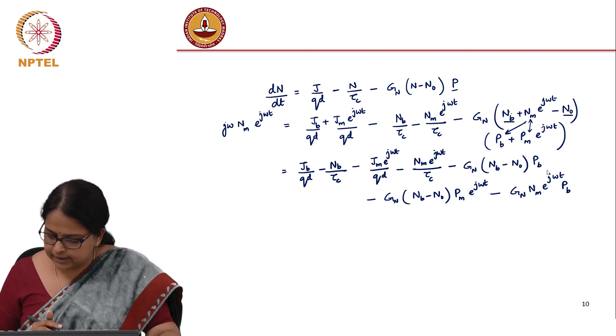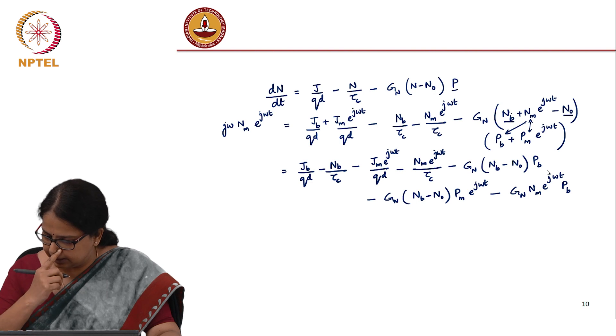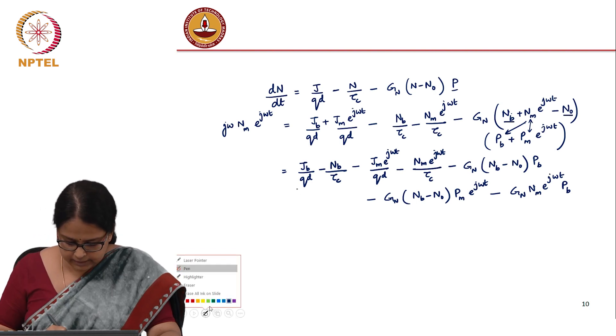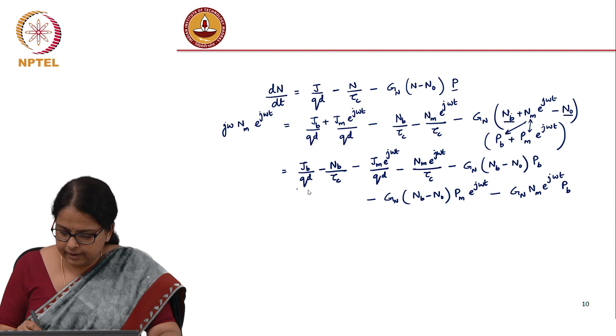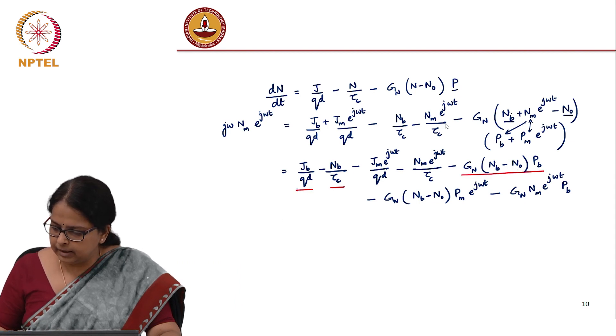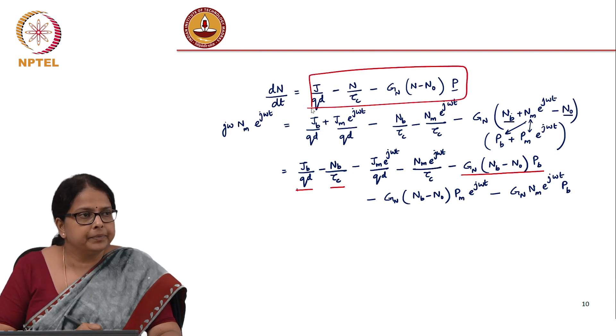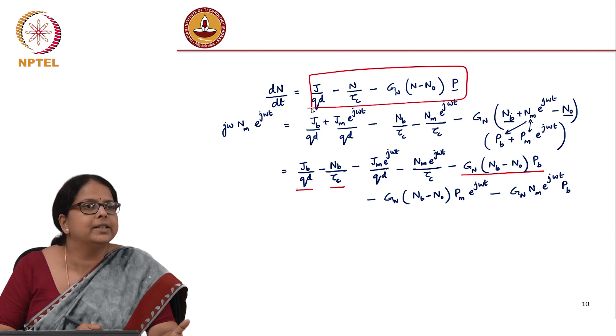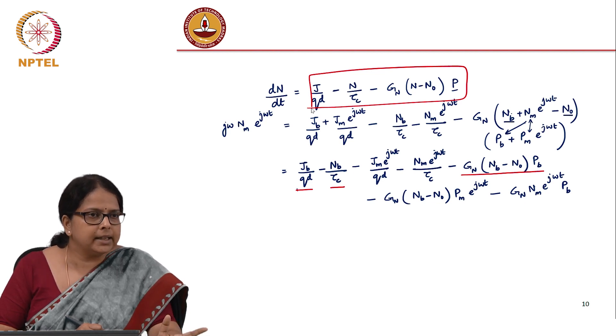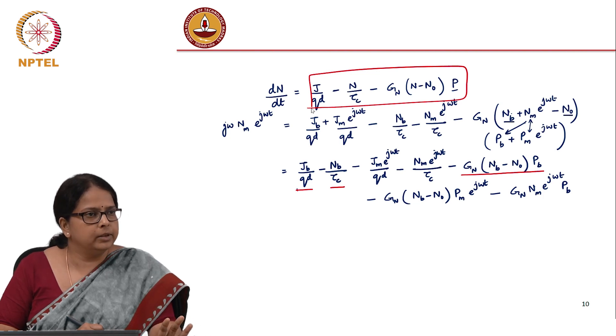Now what are the DC terms? Is there a way we can kill all of that? If you look at this term, you will have j_b/(qd), n_b/tau_c, g_n*(n_b - n_0)*p_b. All the DC terms have to be zero because those correspond to the steady state values. At steady state, these terms sum up to zero.